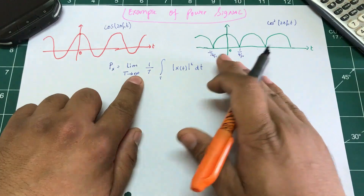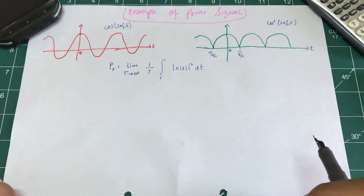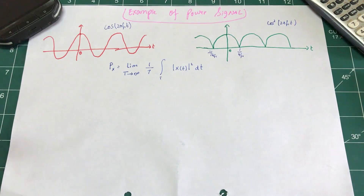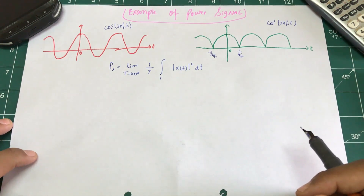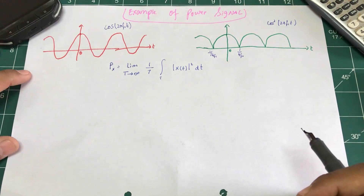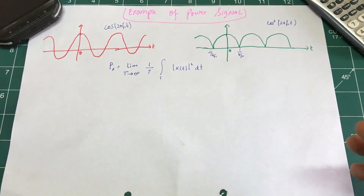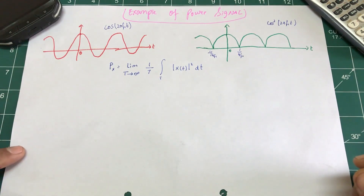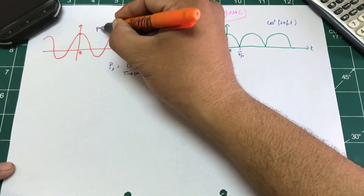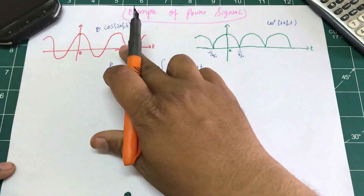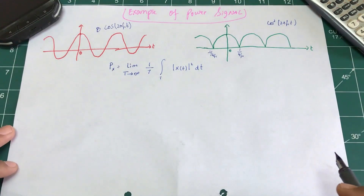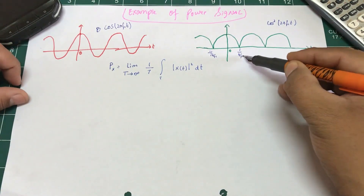It becomes a power signal, not just a cosine function. Let's try to calculate the power of this cosine function. For a signal to be a power signal it must have finite power. Let's say this signal has some amplitude b, so once I square it I'll get b² cos²(2πf₁t).